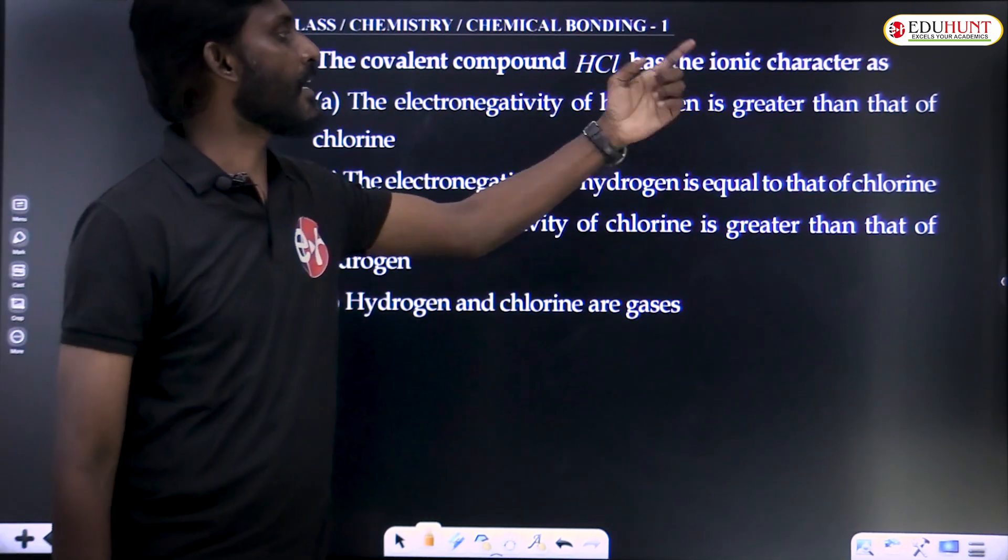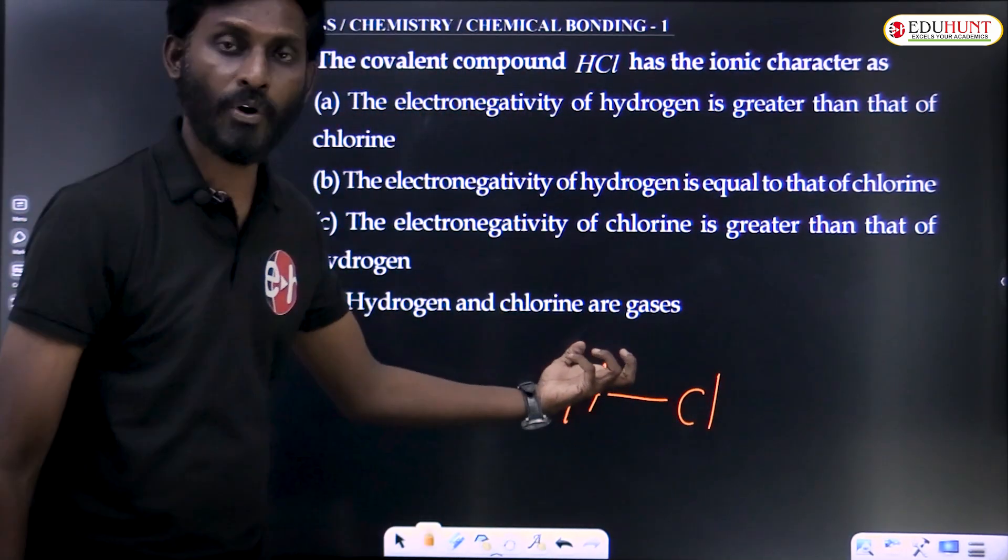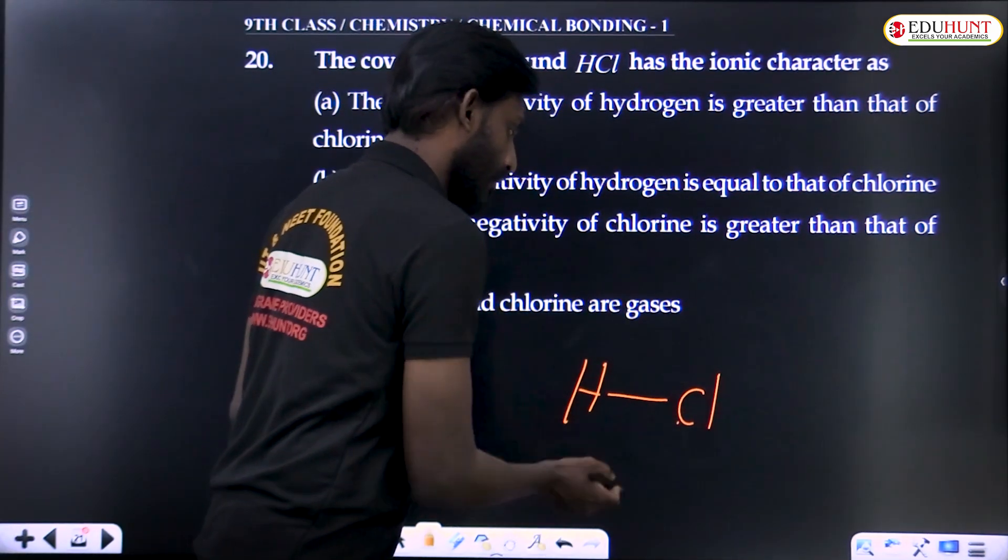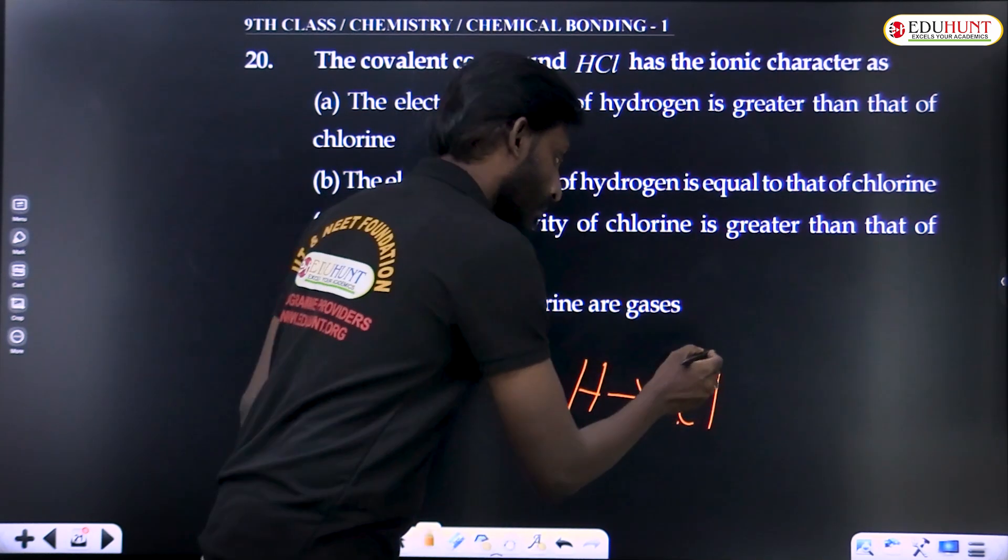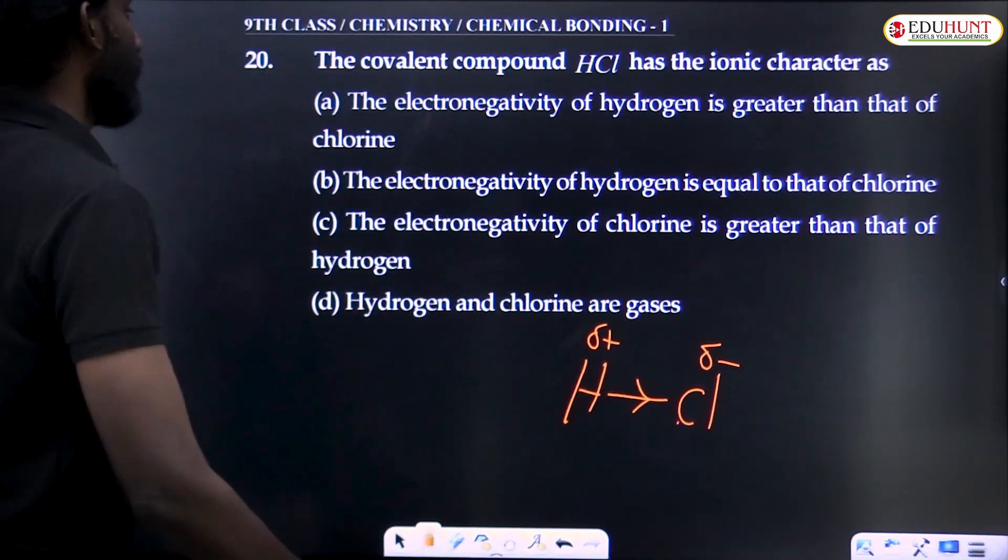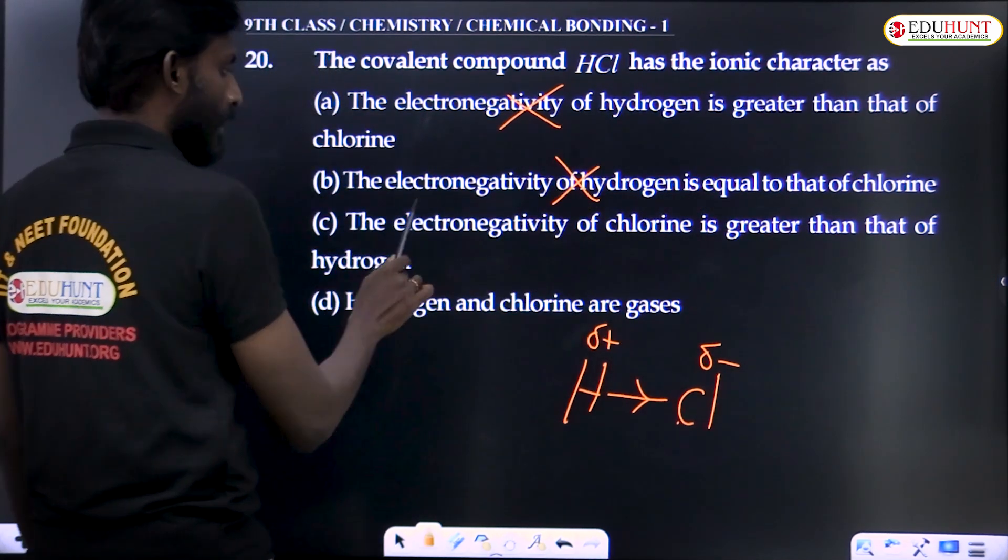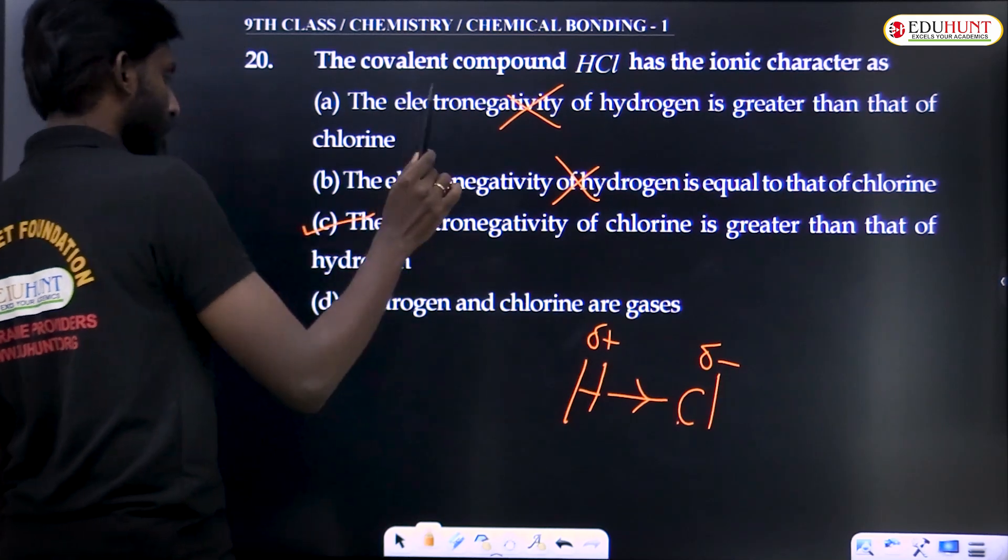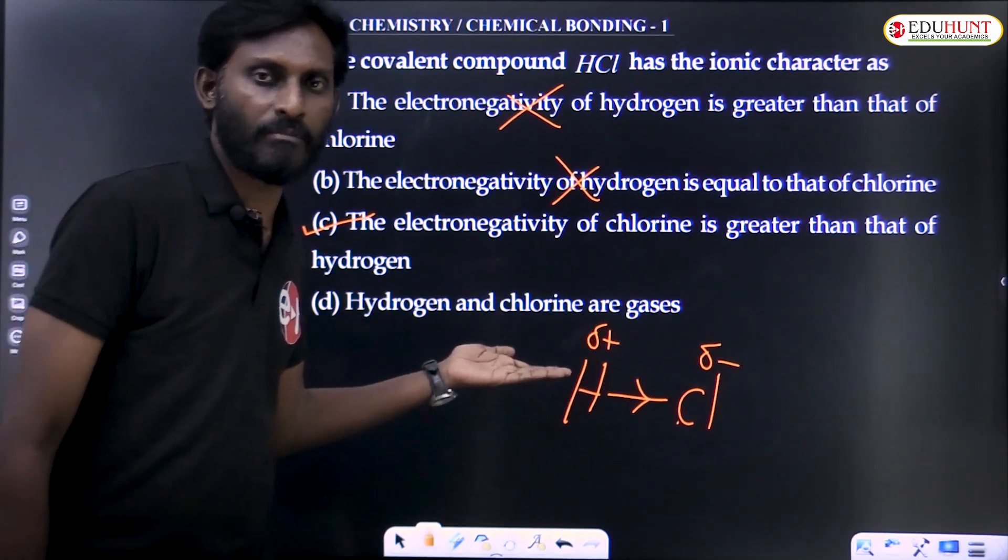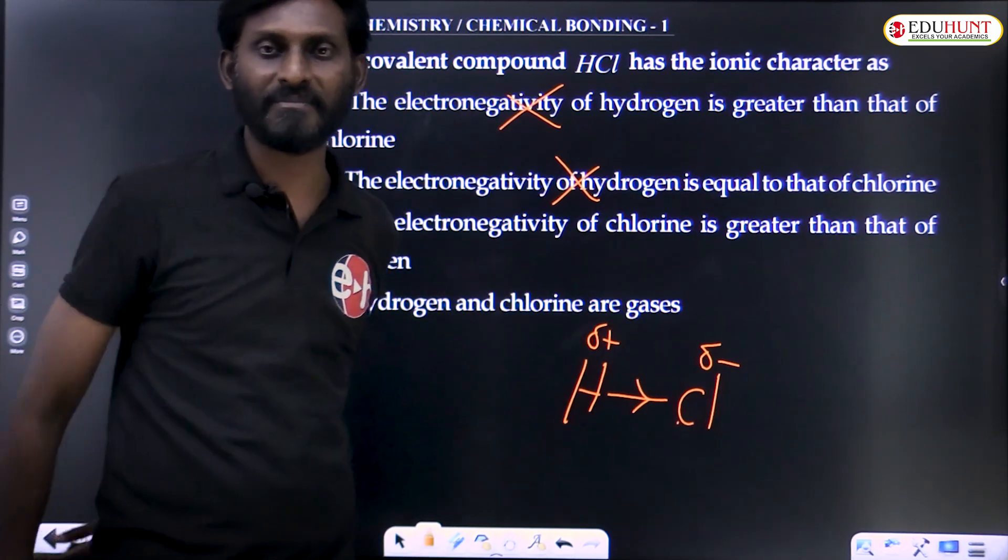The covalent compound HCl has ionic character as - the covalent compound HCl is generally covalent character, but it has some partial ionic character. Because compared to hydrogen, chlorine has more electronegative nature. That's why this bond is more towards chlorine, so it gets some partial negative, partial plus. That means some sort of ionic character. The electronegativity of chlorine is greater than that of hydrogen. That's why the bond is somewhat more towards chlorine, giving partial ionic character to this covalent bond. Thank you.